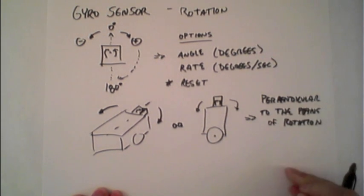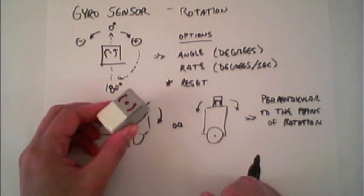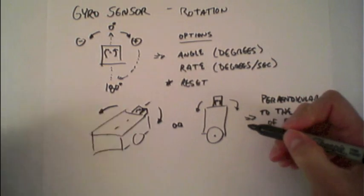So here on the top, the gyro sensor would be placed measuring as the robot turns. Whereas in this case, if the robot's standing straight up and down, you'd want it perpendicular to that plane.